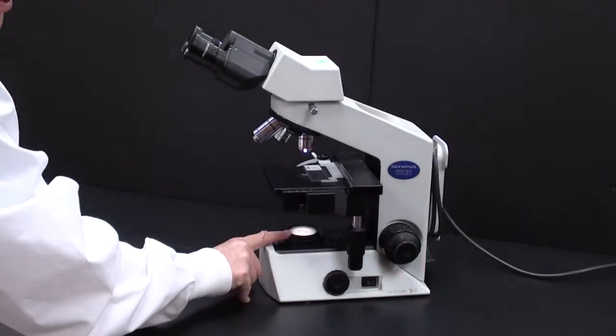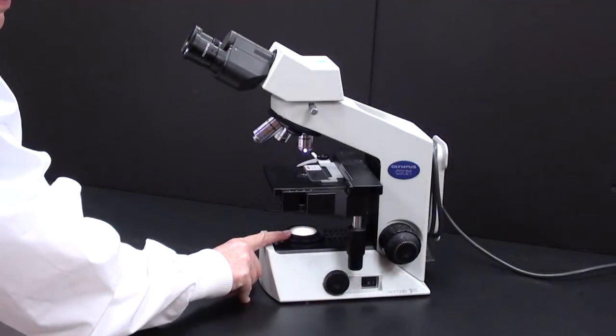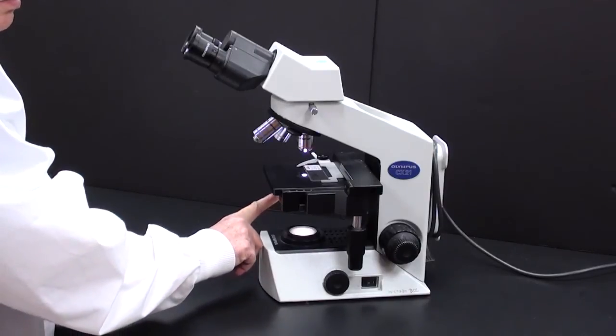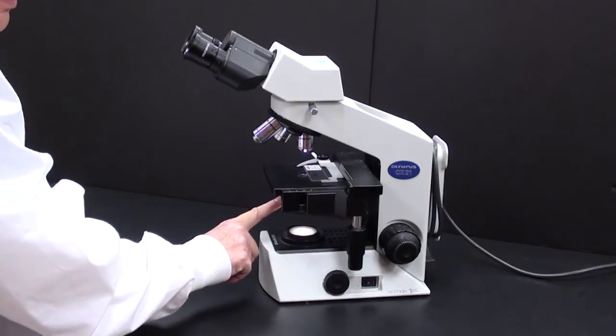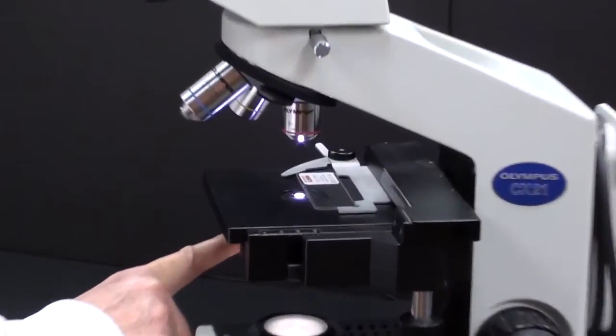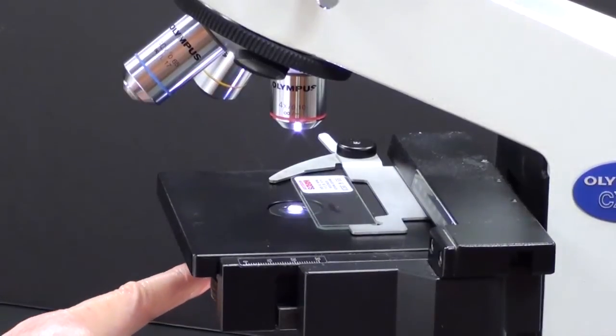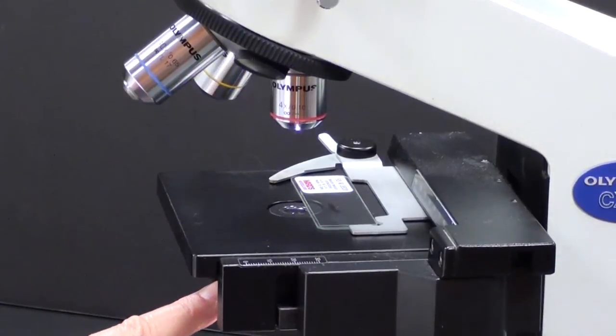This is the light source. Underneath the stage, you can rotate this wheel and it will increase and decrease the light. Sometimes there's a lever which will allow you to do the same thing. In this model of microscope, it's a wheel.